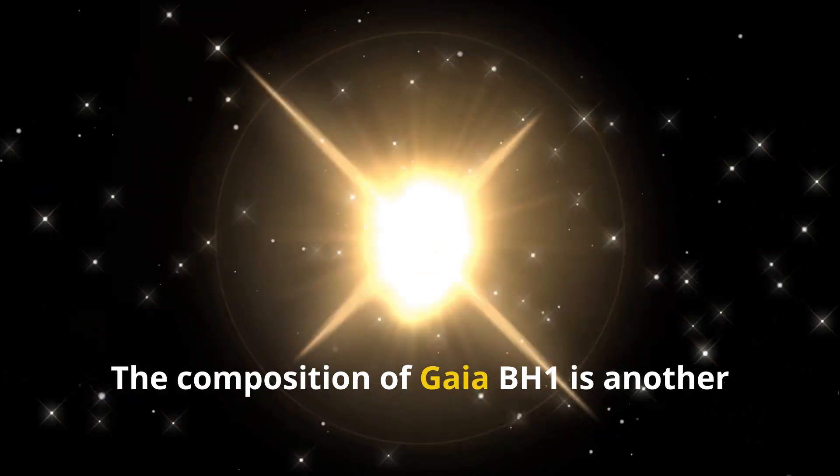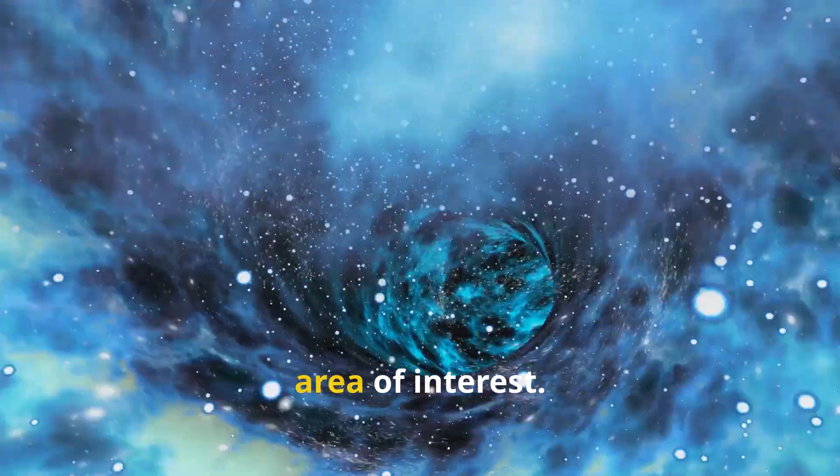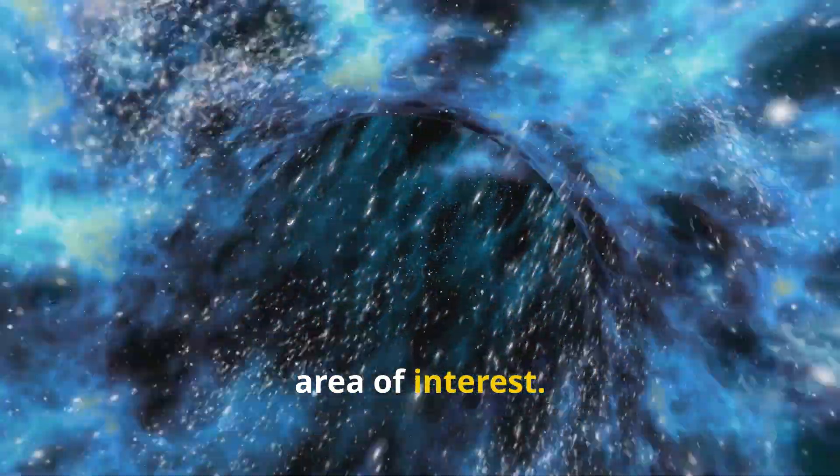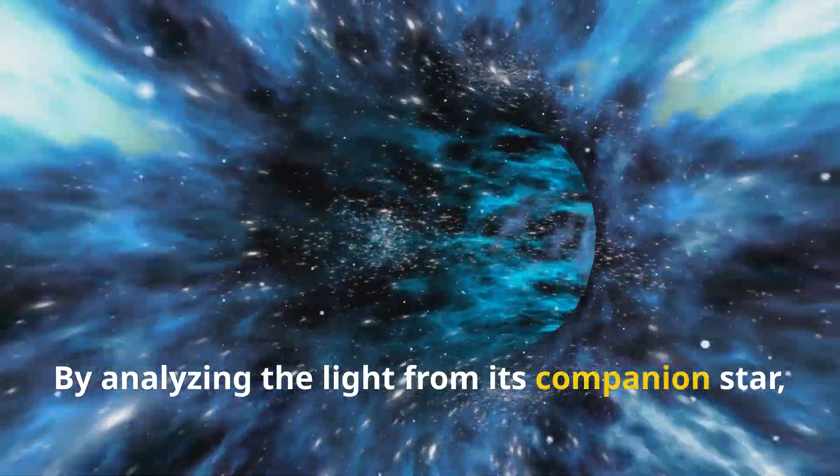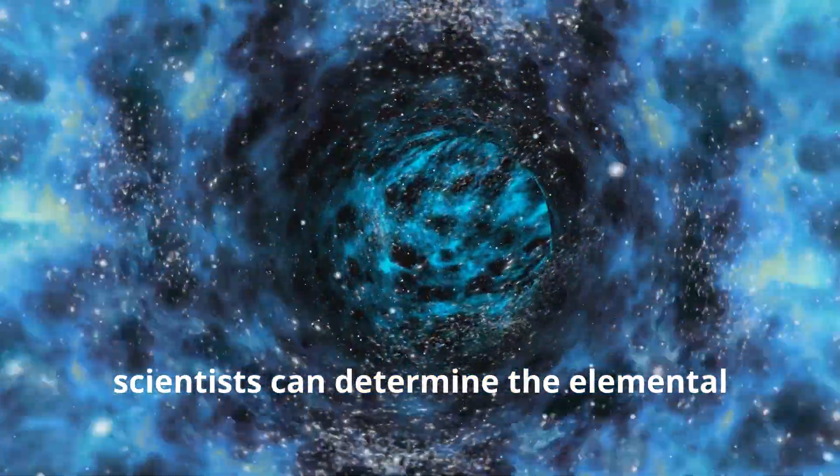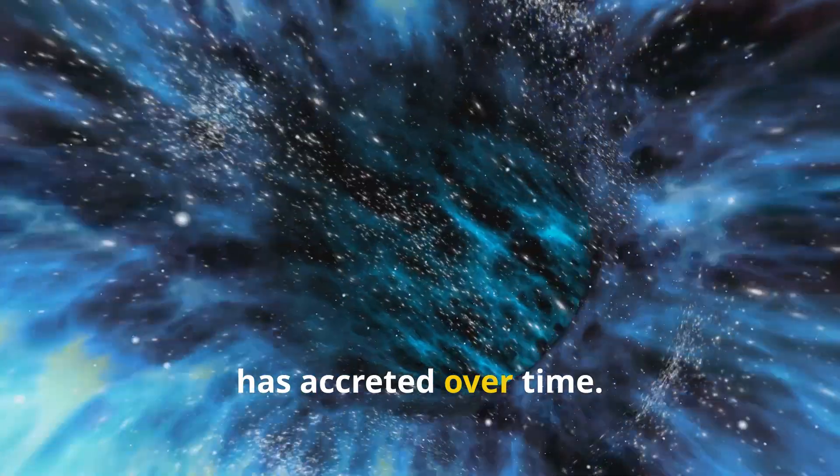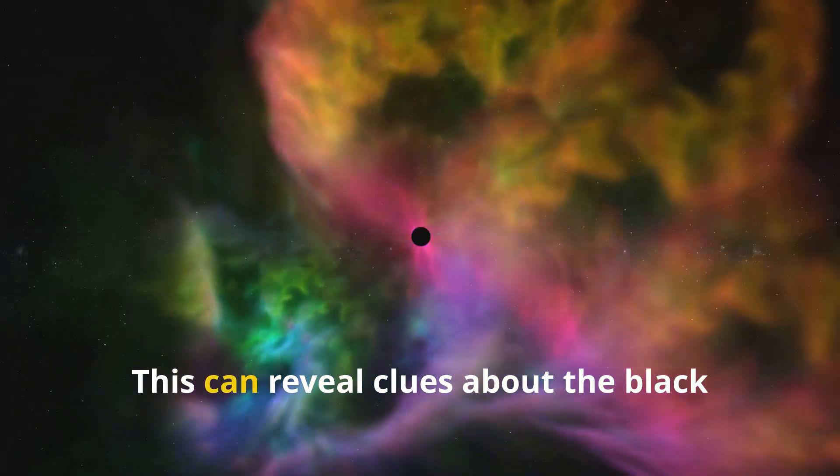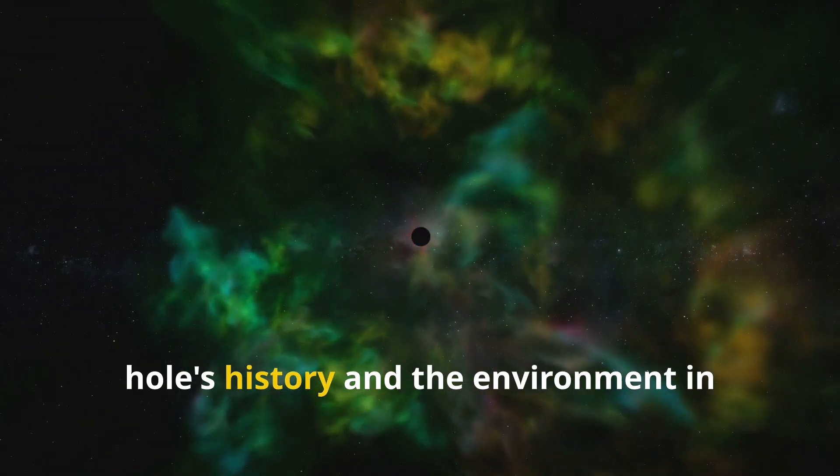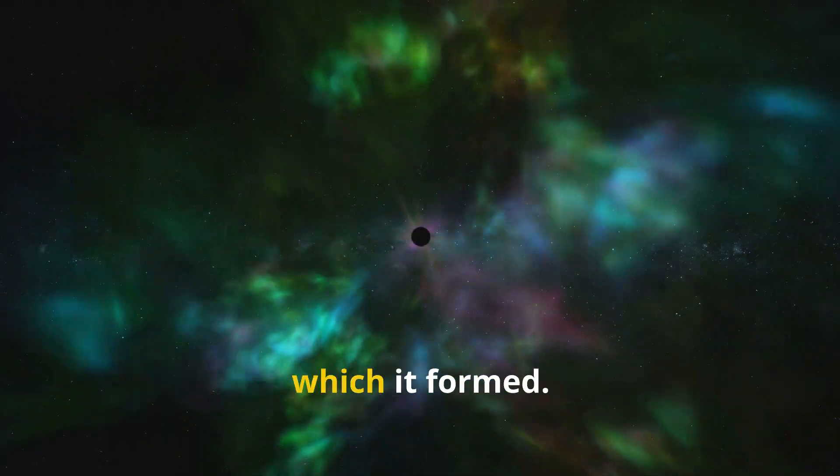The composition of Gaia BH1 is another area of interest. By analyzing the light from its companion star, scientists can determine the elemental makeup of the material that the black hole has accreted over time. This can reveal clues about the black hole's history and the environment in which it formed.